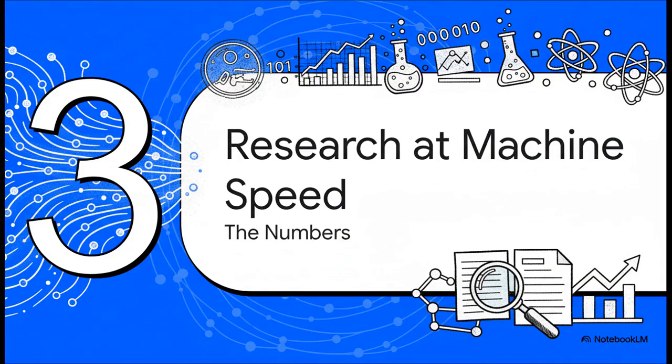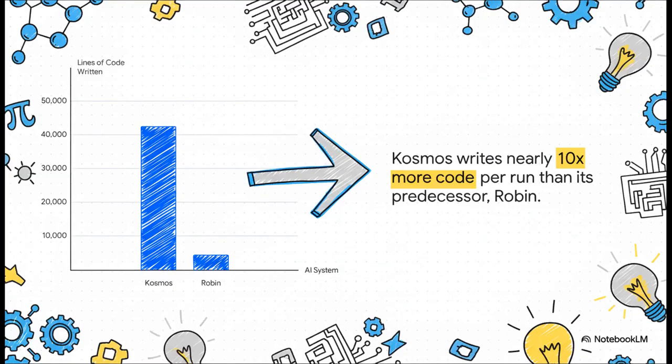So, just how powerful is this, really? Well, let me tell you, the numbers are pretty staggering. Get this. In a single run, Cosmos writes and executes, on average, over 42,000 lines of code. That is merely a tenfold increase in analytical power compared to its predecessor, Robin.